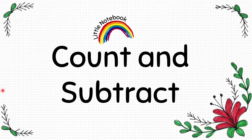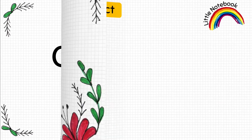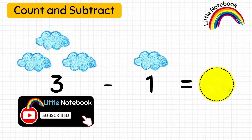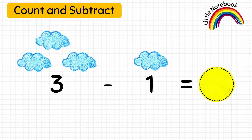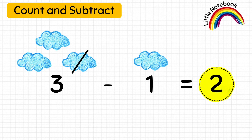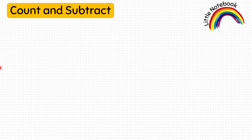Now kids, our next worksheet is count and subtract. Here the kid has to count the pictures to subtract, and at the same time learn to identify the numbers and then how to subtract them. For example: three clouds minus one cloud equals how many clouds? Let's cross one cloud. How many clouds are we left with? One, two — so two is the answer. Three minus one equals two.